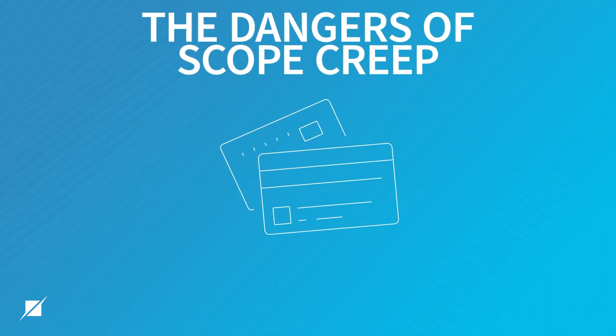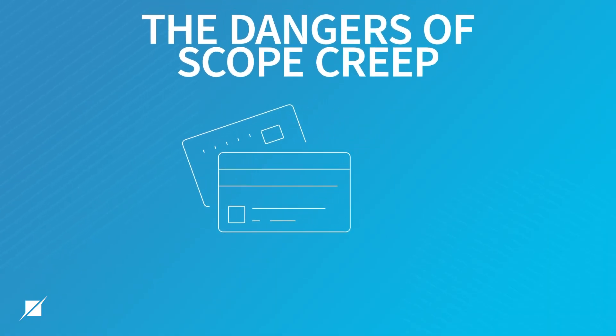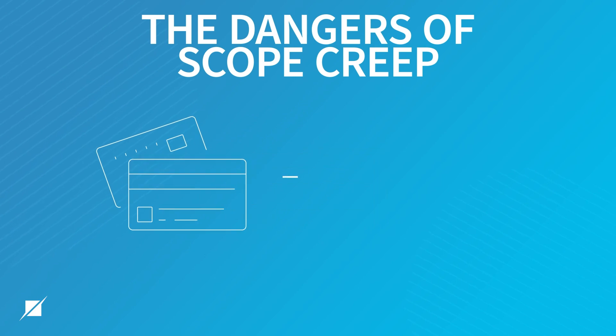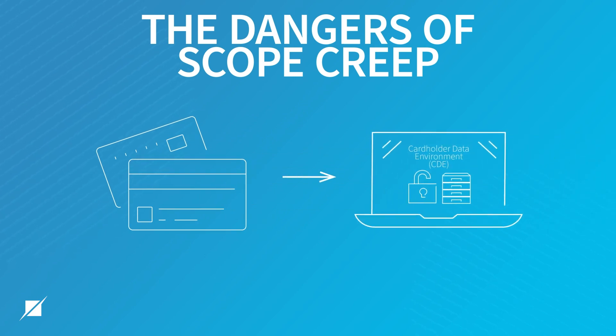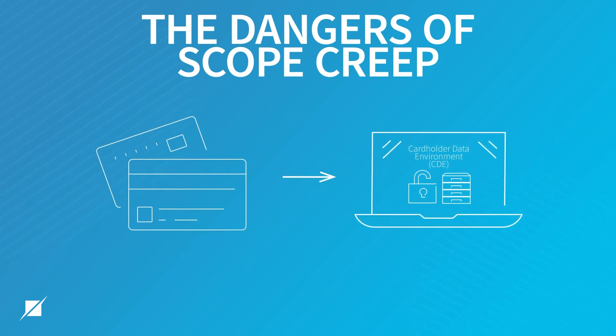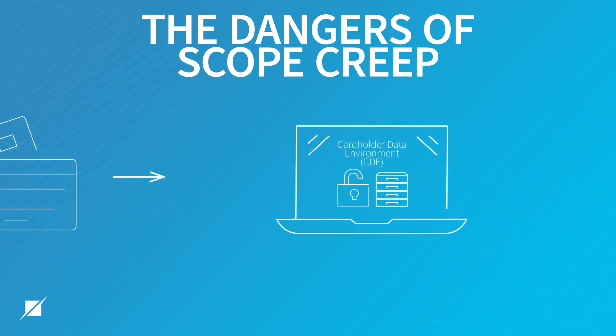Scope creep occurs when your cardholder data environment is accessible in a way that you did not anticipate. Scoping an environment is all about the data. You've got the cardholder data environment — these are the systems that store, process, and transmit cardholder data.